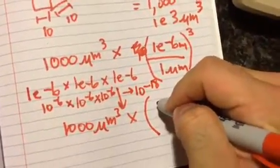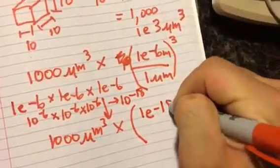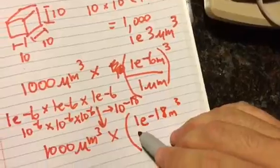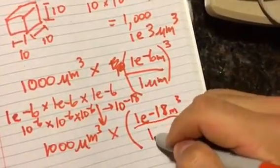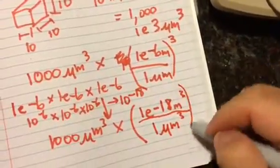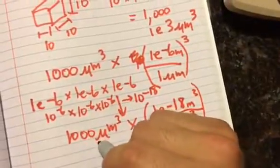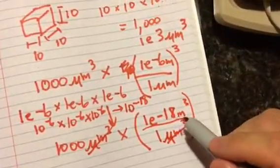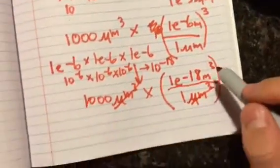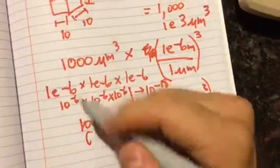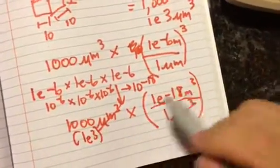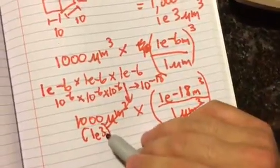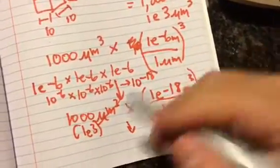So that to the third power is 1e-18 meters cubed. So now we have our right units here for our answer over one micron cubed. And hey, now we have microns in the bottom of our fraction here, so we can cancel those out and we're left with meters cubed. So one thousand times 10 to the -18 power meters cubed, and so one thousand is the same as 1e3. Remember, so that's the same as 10 to the third power, so it's -18 plus 3, so that brings us to our final answer of...